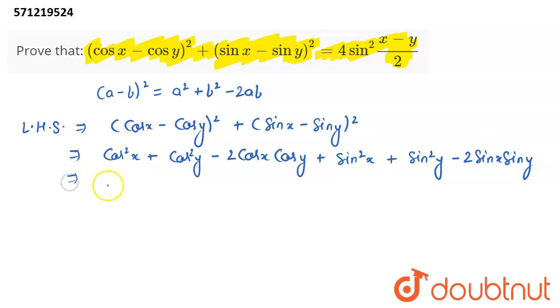So in the next step, you can pair cos²x with sin²x. Why am I doing so? Because there is an identity, cos²θ + sin²θ equals 1, and I am going to use it. Plus, I am pairing sin²y with cos²y, and you can take out of these two terms, I am taking minus 2 common, and it can be written as cos x cos y + sin x sin y.